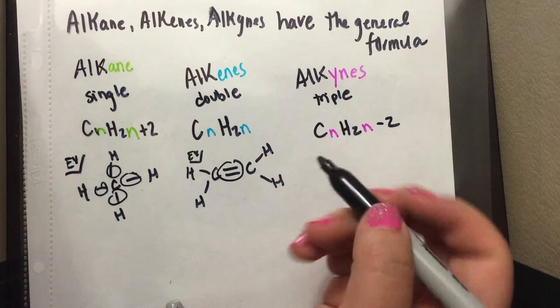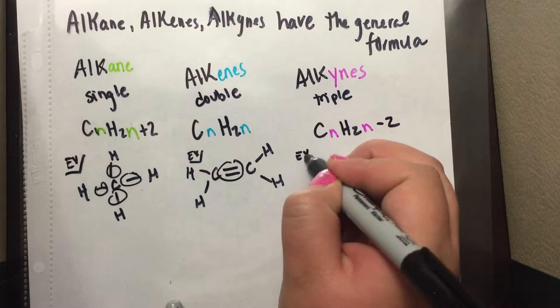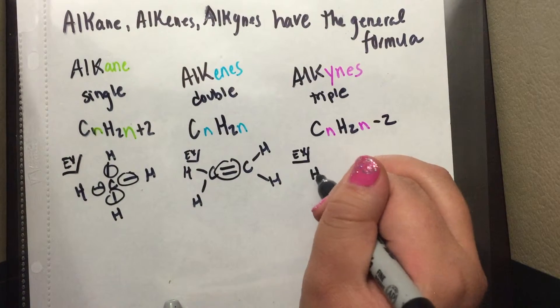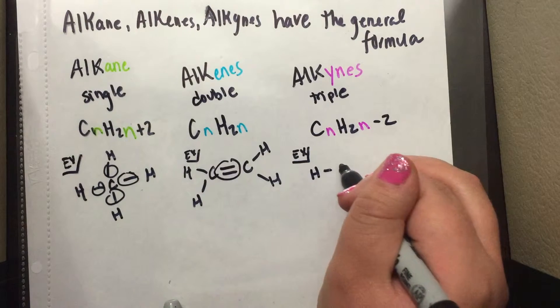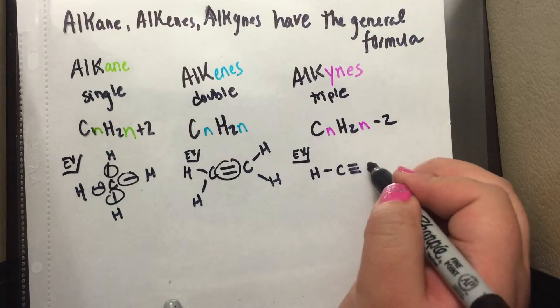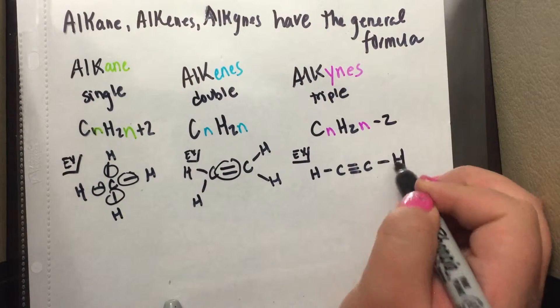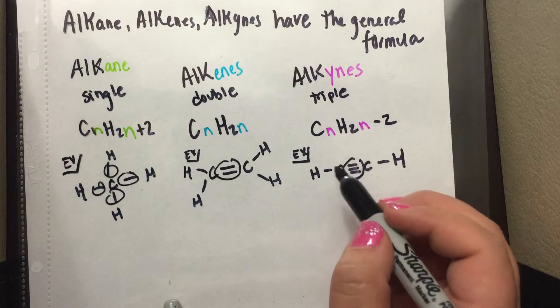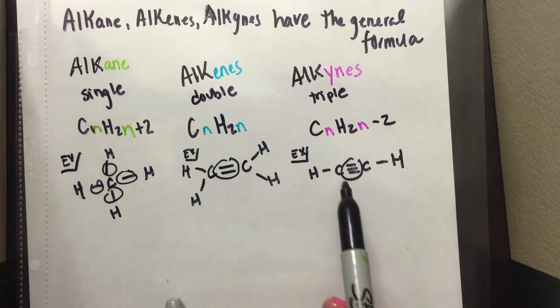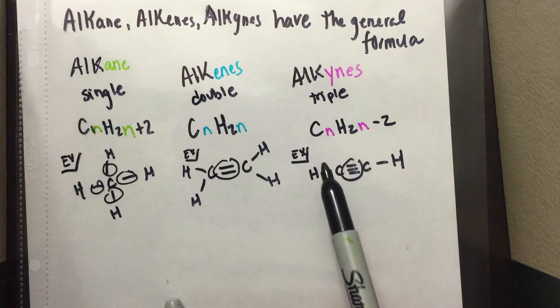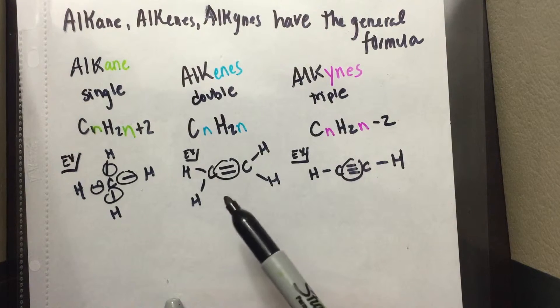And an example of an alkyne would be C2H2. And where you see there is a triple bond right there. So that's how you know whether you have an alkene, an alkyne, or an alkane. So you see the triple bond right there, and that's how you know it's an alkyne, compared to the other ones.